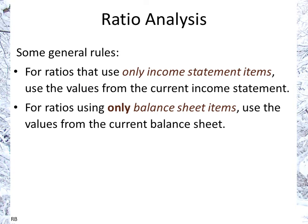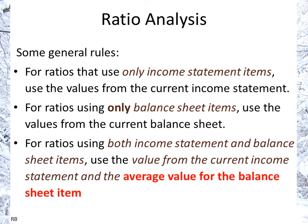If you have only income statement items or only balance sheet items, you can use the values of a current income statement or current balance sheet. But if you have a mixed ratio using both the income statement and balance sheet, the current income statement value and the average value of the balance sheet item is used. The reasoning is that the income statement covers the duration of a year, so you want the average values of the asset item — that's why we average the two balance sheet values.